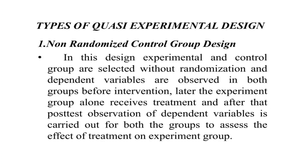In Non-Randomized Control Group Design, you will have an Experimental Group and a Control Group. Intervention will be given only for the Experimental Group, not for the Control Group. But Randomized Selection of Subjects will be absent. Both Experimental and Control Groups are selected without randomization, and Dependent Variables are observed in both groups before Intervention — that is, a Pre-Test is conducted in both groups.